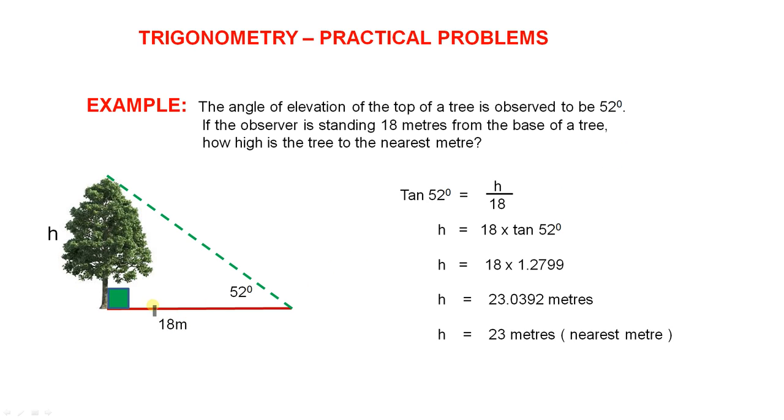Now here we are. This is all the information we need. There's the tree. There's the angle of elevation. The observer is 18 metres from the base of the tree, and we have to find the height.